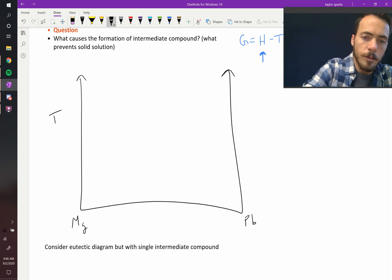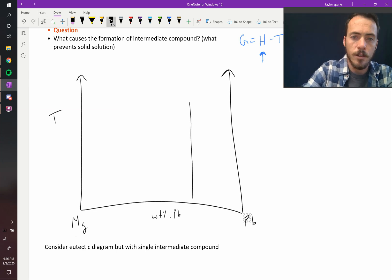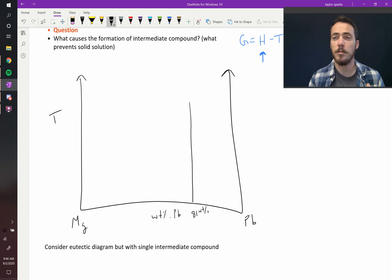If you plot the weight percent of lead on this axis, then there is a compound that exists right here at 81 weight percent lead. So this is at 81 weight percent.